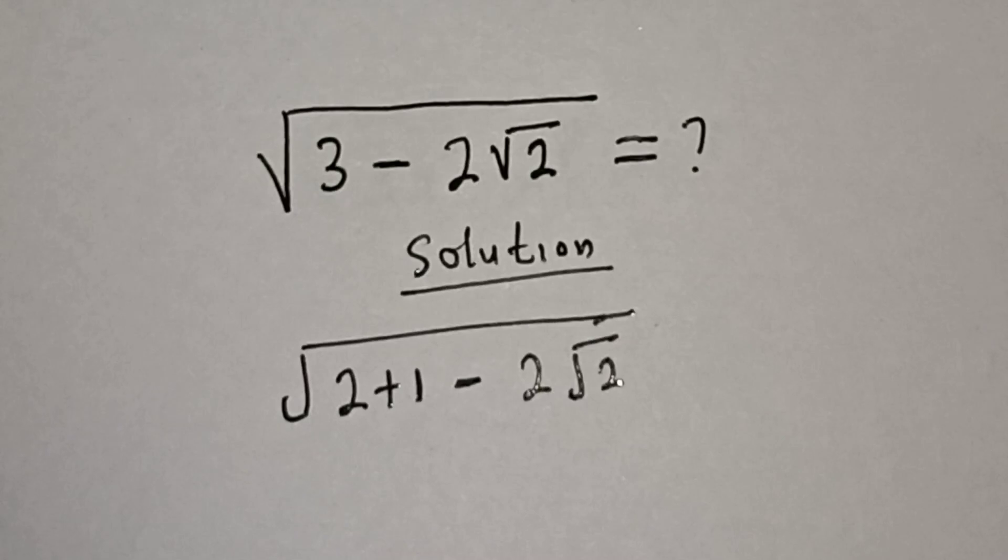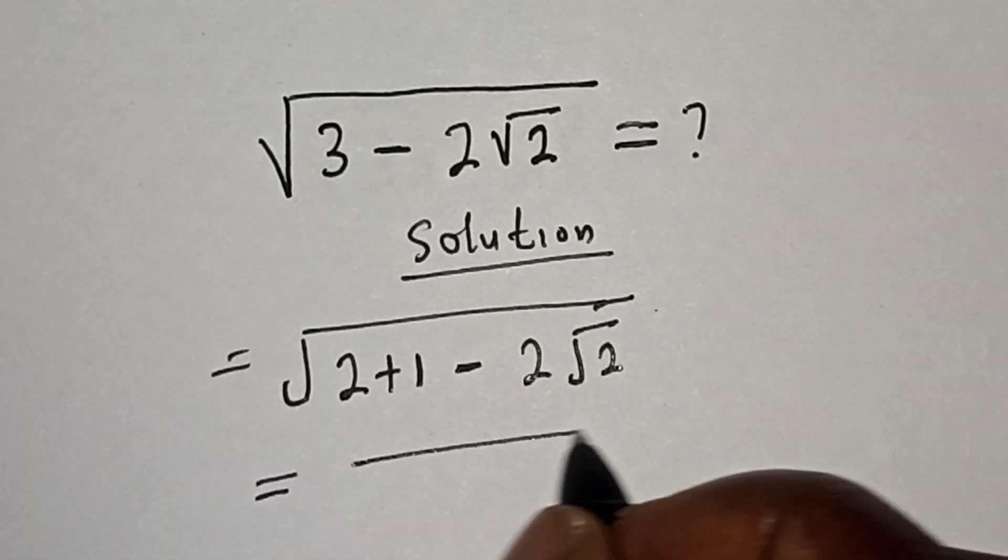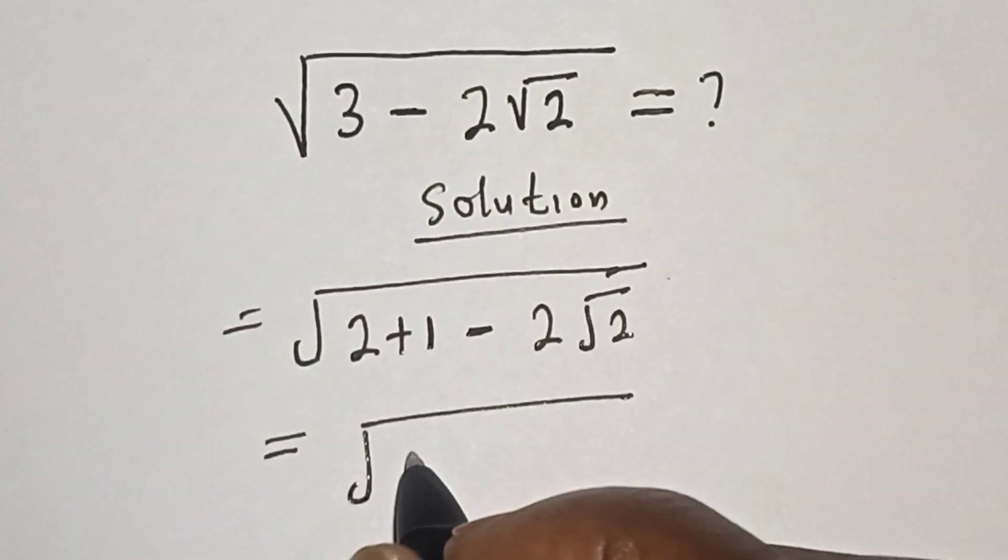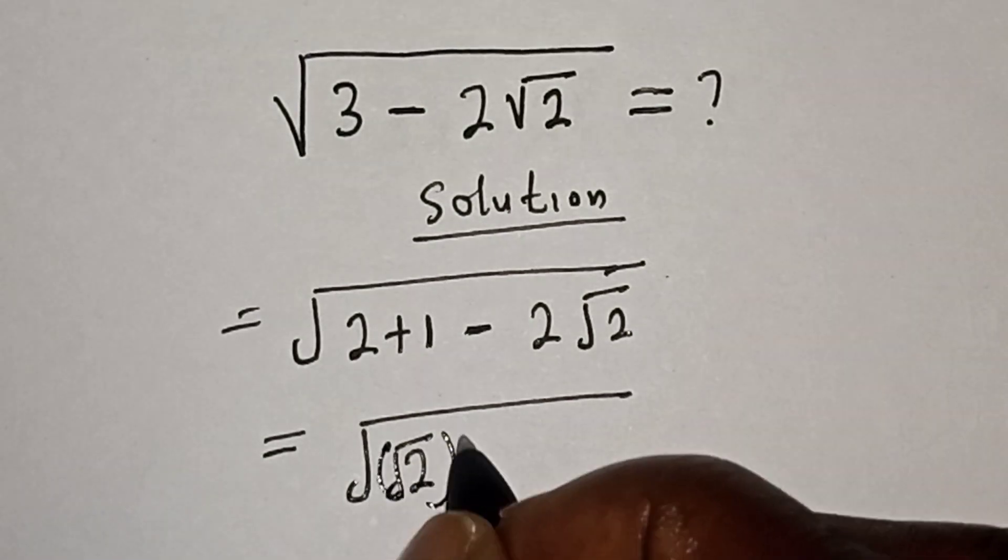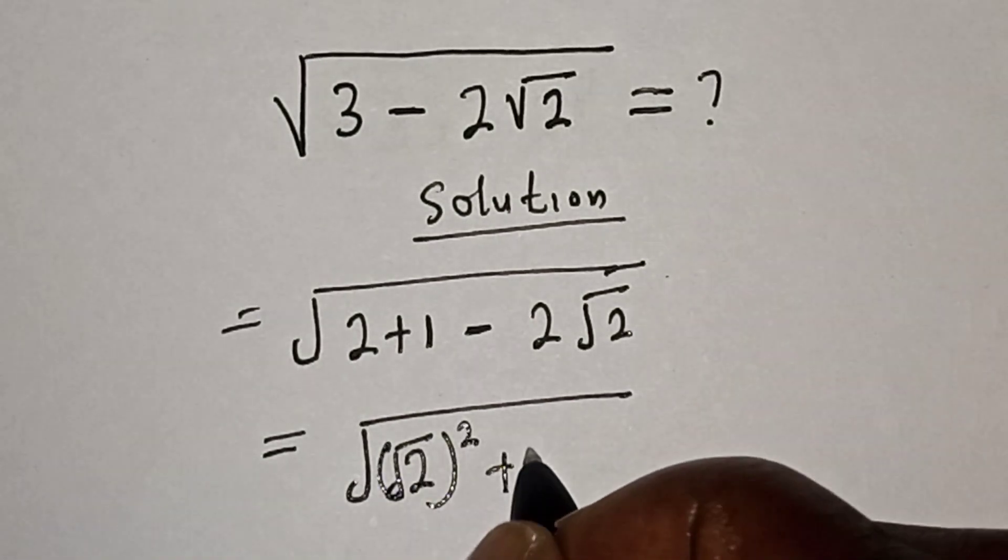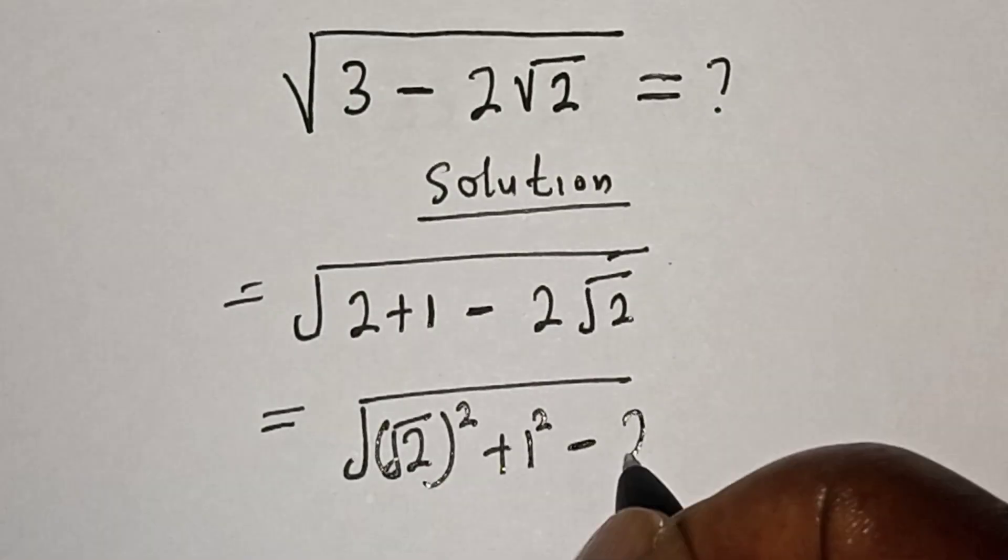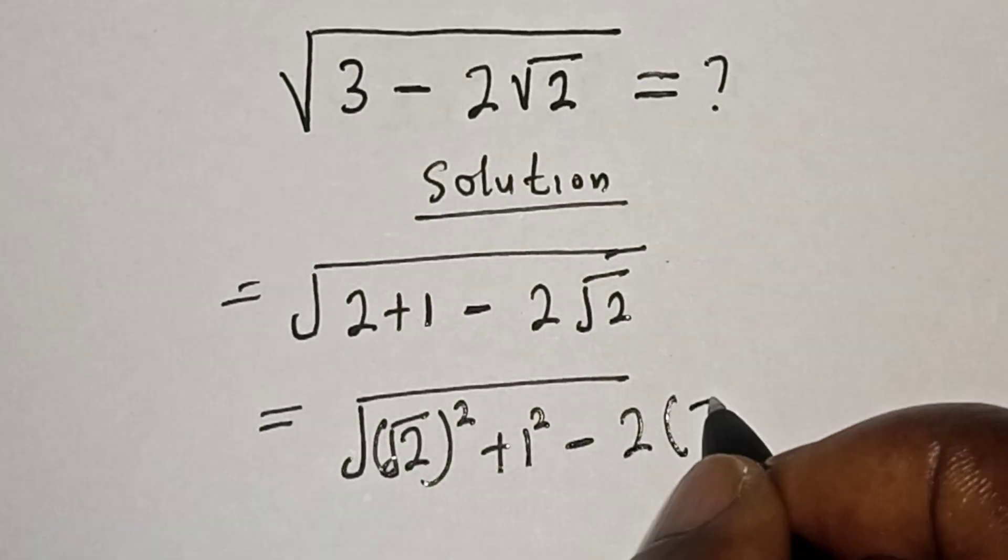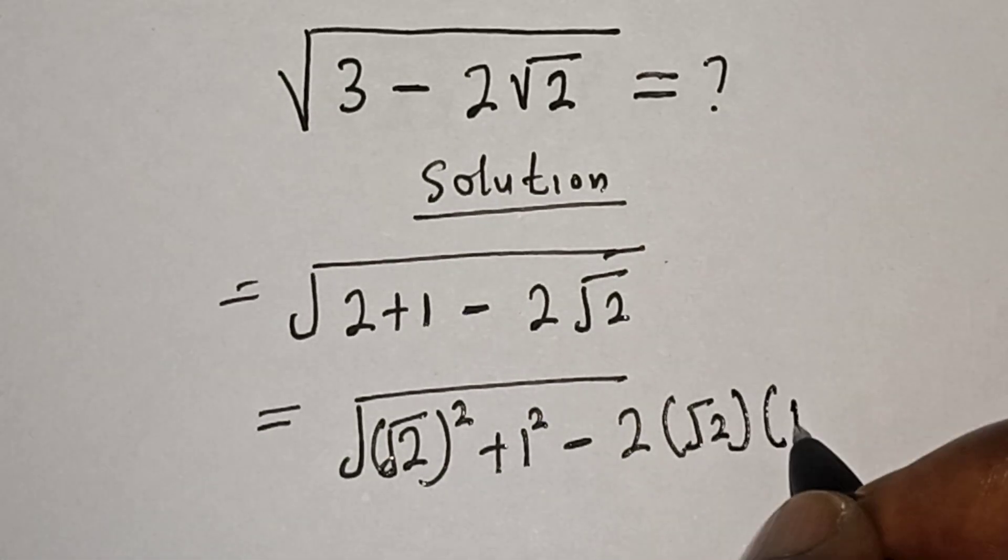This can be written as square root of: (√2)² plus 1² minus 2 multiplied by √2 multiplied by 1.